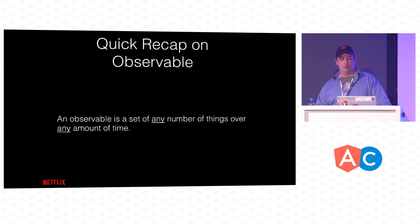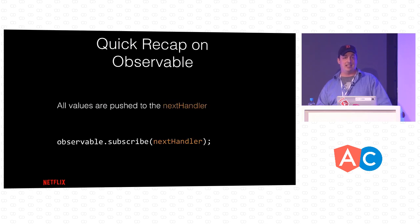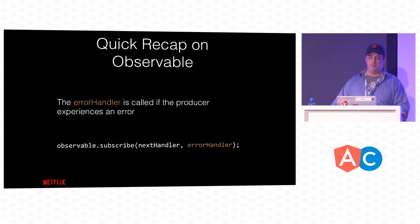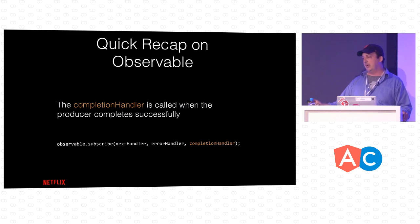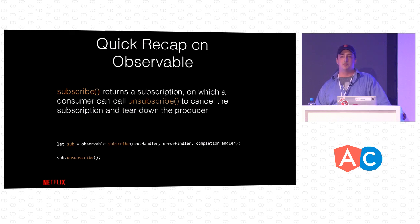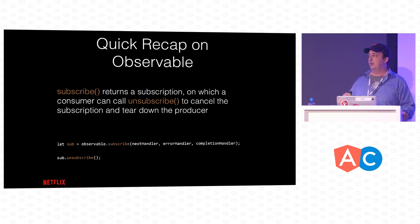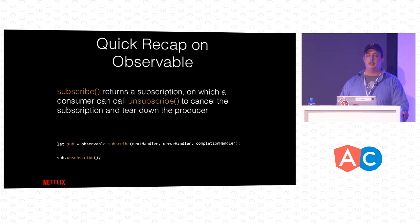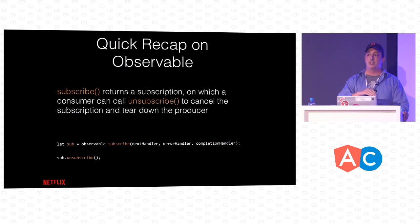Quick recap on observables: an observable is any number of things over any amount of time. All values are pushed to the next handler, the first argument to subscribe. If there's an error, it goes to the error handler, the second argument. If you want to know when it's completed, you provide a completion handler. Observables are lazy — they don't do anything until you call subscribe. When you do, it returns a subscription with an unsubscribe method you can call to stop producing values. Note: if you call unsubscribe, the completion handler won't fire; that's for when the producer tells the consumer it's done successfully.